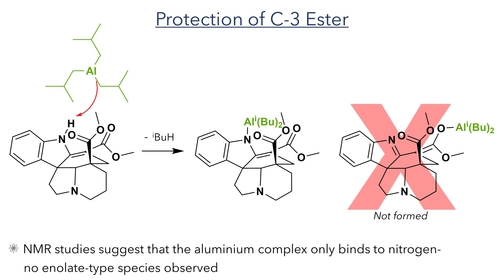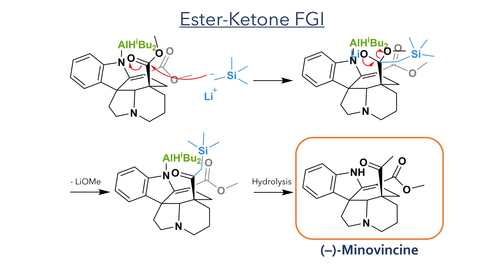Nonetheless, the molecule is sufficiently protected for the next reaction to discriminate between the two ester groups. After the formation of the aluminium-protected adduct, trimethylsilylmethyl lithium was added directly to the solution. This acts as a nucleophile and adds to the unprotected ester to form a tetrahedral intermediate. Lithium ethoxide is expelled to produce a TMS-functionalised ketone. Both the TMS and the aluminium groups are hydrolysed upon workup with Rochelle's salt to yield the target in a 68% yield. This completes the synthesis of minovinsine in an incredible eight steps, with only one transient protecting group and one chiral catalyst used to produce the highly complex pentacyclic molecule.